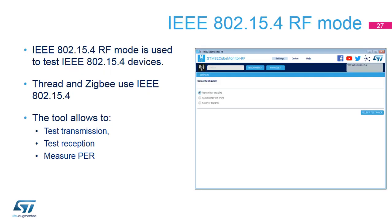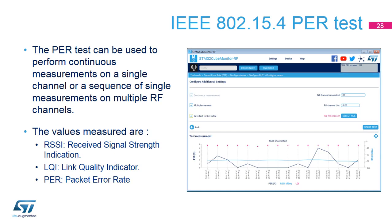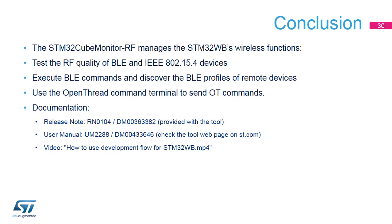IEEE 802.15.4 RF mode is used to test RF devices that operate using the OpenThread or ZigBee communication protocol. The RF mode user interface is similar to the BLE RF test panel. The PER test can be used to perform continuous measurements on a single channel or a sequence of single measurements on multiple RF channels. For more information related to the STM32 Cube Monitor RF tool, please refer to the documents and videos listed in this slide.